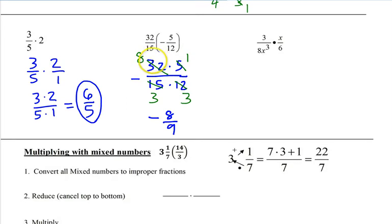And then now we can reduce. 32 and 12, they share a common 4. So after dividing, we get 8 and 3. 15 and 5, they both share a common 5. So after dividing, we get a 3. And then multiplying it, 8 times 1 is 8, 3 times 3 is 9. All right, so hopefully now you kind of get a little bit better picture of it.